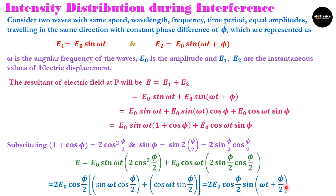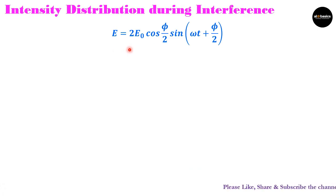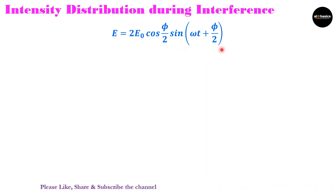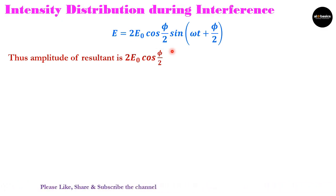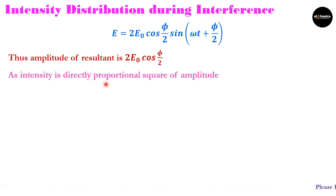So the amplitude of the resultant wave is given as 2E0 cos(φ/2). Since intensity is directly proportional to the square of the amplitude, we can find intensity from this.